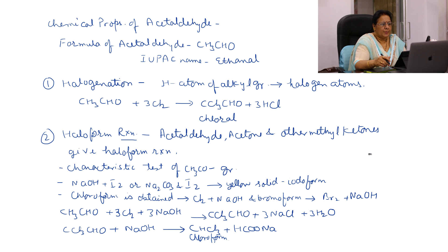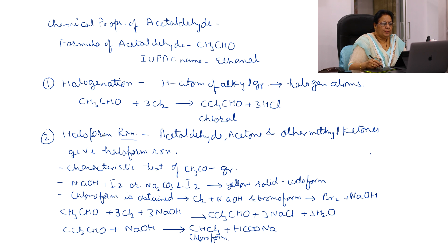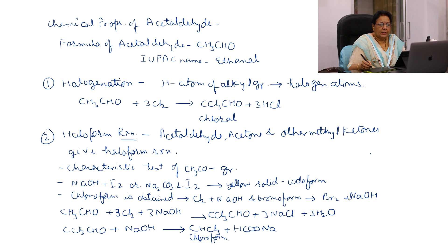The second important property is the haloform reaction. This property is given by acetaldehyde, acetone, and other methyl ketones. This is a characteristic test of the CH3CO group — compounds having a CH3CO group give the haloform reaction. When this reaction is carried out with NaOH and I2, or Na2CO3 plus I2, then yellow solid iodoform is obtained. Chloroform is also obtained when the reaction is carried out with Cl2 and NaOH. We also get bromoform by Br2 plus NaOH.